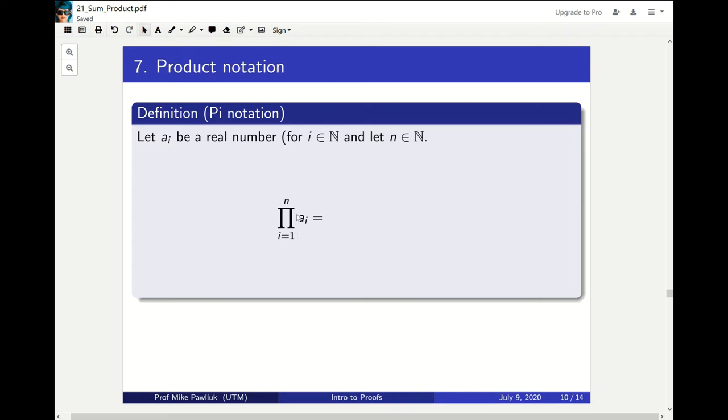So the product notation uses a pi, for p. Sigma is an s for sum. So the product of these things is what you would expect. It's a1 times a2 times a3, and you keep going until you get to n.